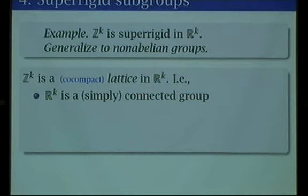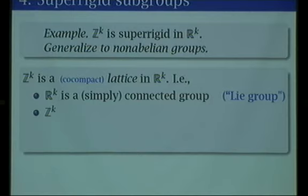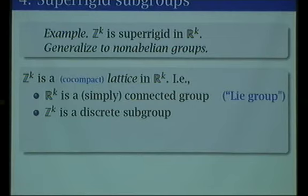A Lie group — or more generally a topological group — is a topological space. It's a group, but when I've got a simply connected manifold, I'll call that a Lie group for today's purposes. It's a connected group. And then inside that Lie group we've got this subgroup ZK. The first crucial thing about ZK is that it's discrete — it obviously has no accumulation points. The integer points do not accumulate anywhere. It's a discrete subgroup of RK.